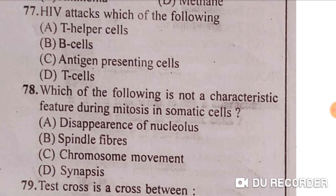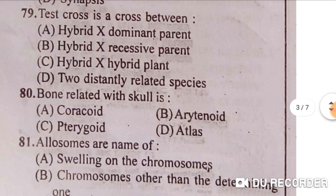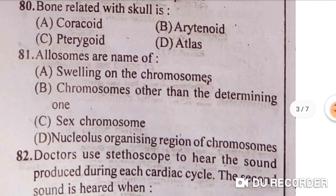Which of the following is not a characteristic feature during mitosis in somatic cells? Synapsis — option D is the correct answer. Next: test cross is a cross between a hybrid and a recessive parent — option B is correct. Next: the bone related to the skull is pterygoid — option C is correct.